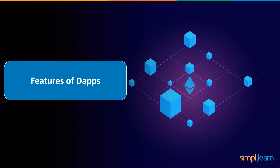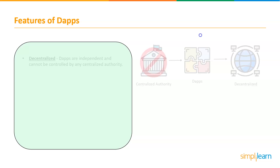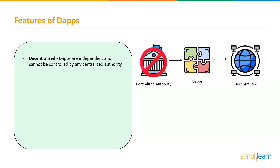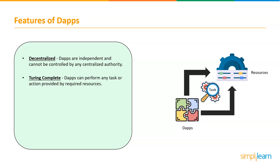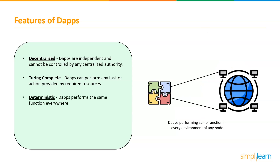Let's discuss some features of DApps which make them unique and popular. First is decentralized — DApps are independent and cannot be controlled by any centralized authority. Second is Turing complete — DApps can perform any task or action provided by the required resources. Third is deterministic — irrespective of the environment, DApps perform the same function everywhere.